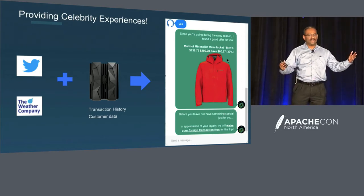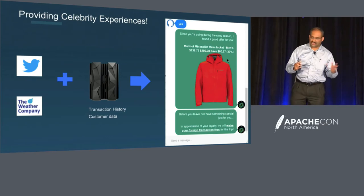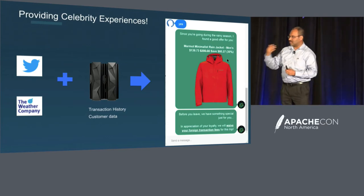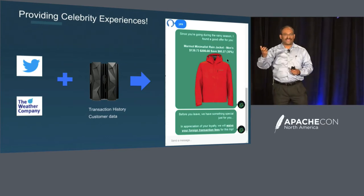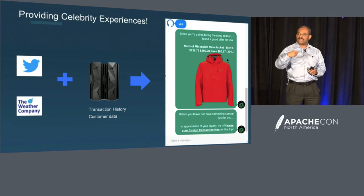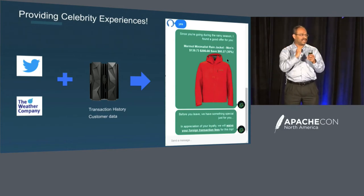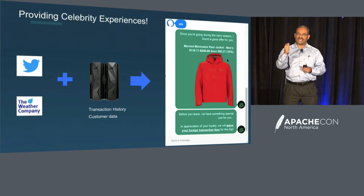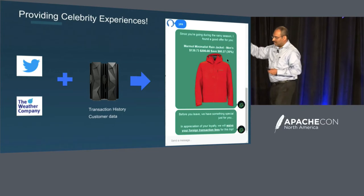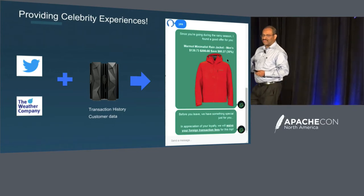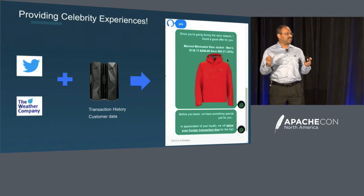So you have an understanding of how customers are using credit cards. But couple that with other data — social media data, weather data, et cetera — and build real-time offers for the customer as they are transacting with the bank. What we call a celebrity experience. Forrester uses that phrase — celebrity experience.